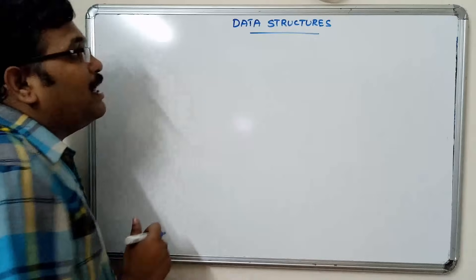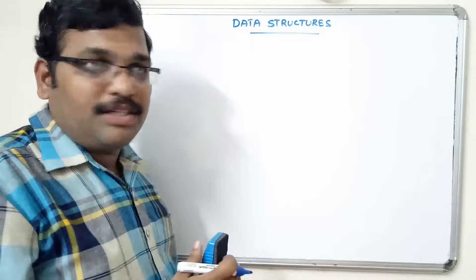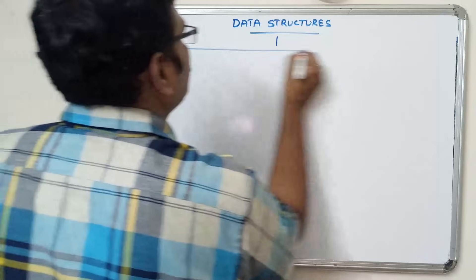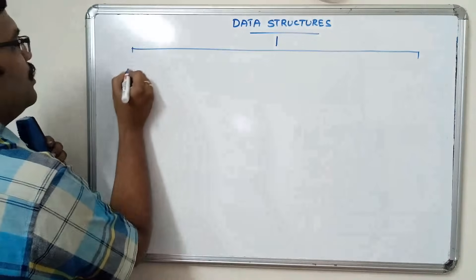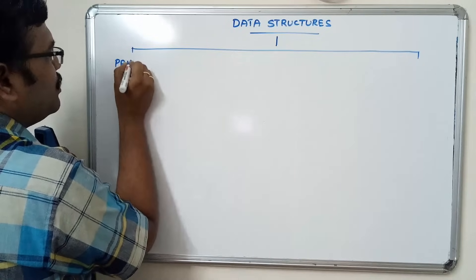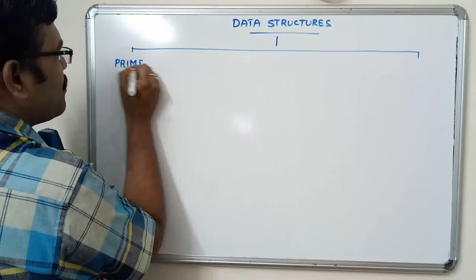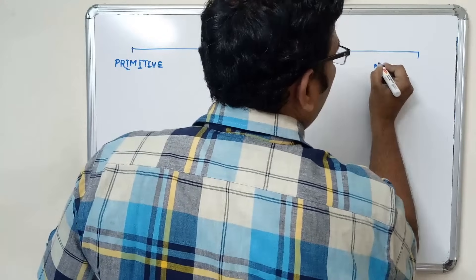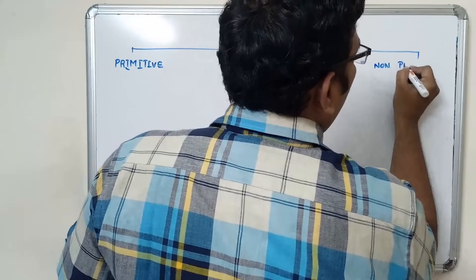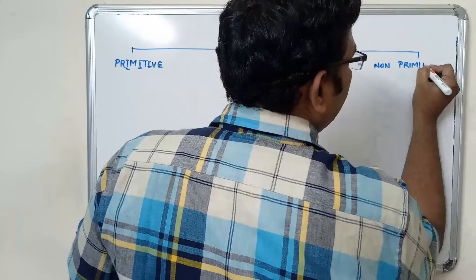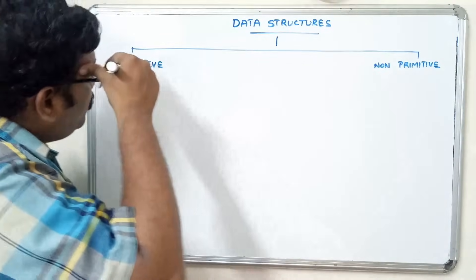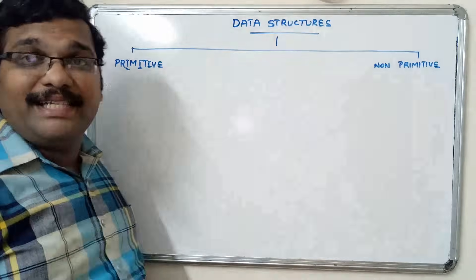Now let us see how many types of data structures there are. There are two types: one is primitive data structure and another one is non-primitive data structure. We have already seen primitive data structures.